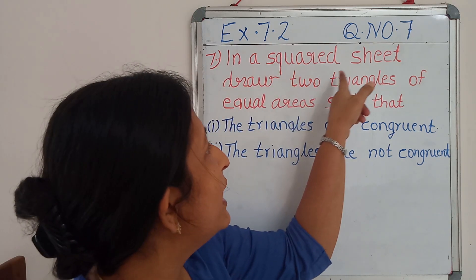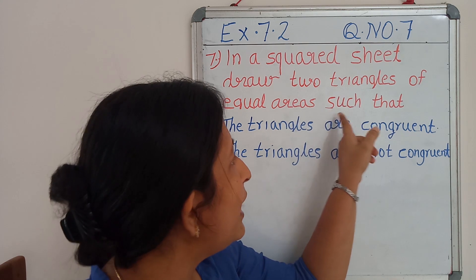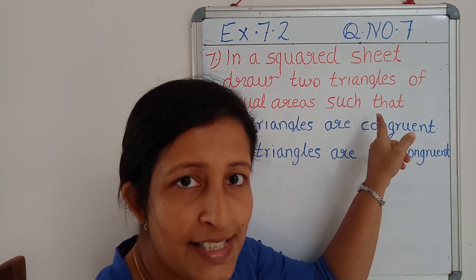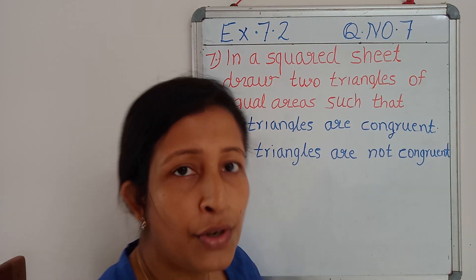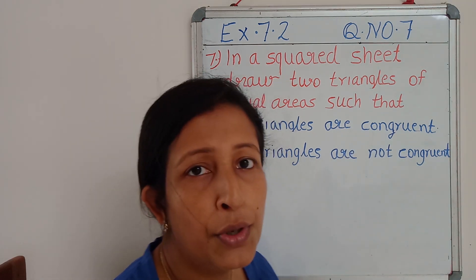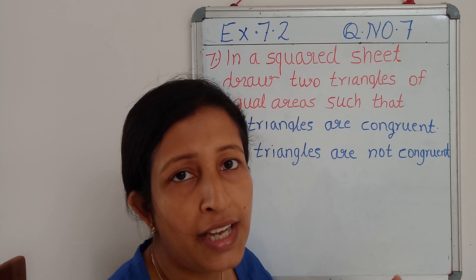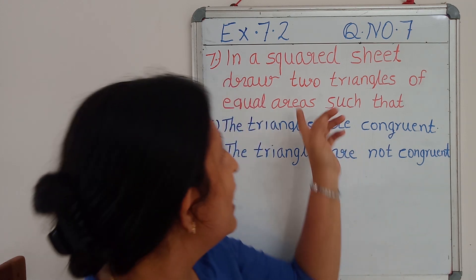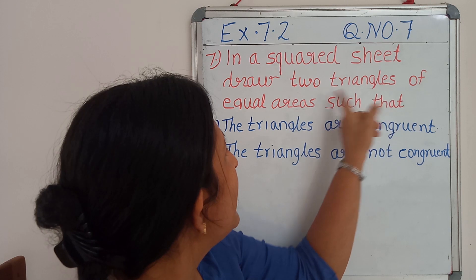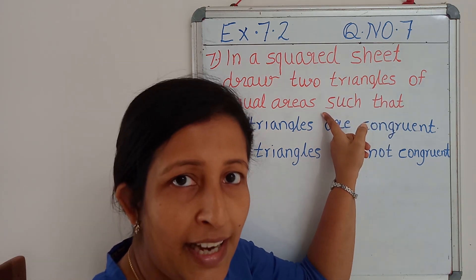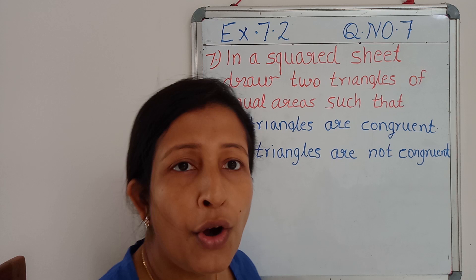In a squared sheet, draw two triangles of equal areas such that the two triangles are congruent. Again, one more question is there. For that, we should take one more squared sheet and show two triangles of equal area where those two triangles are not congruent.